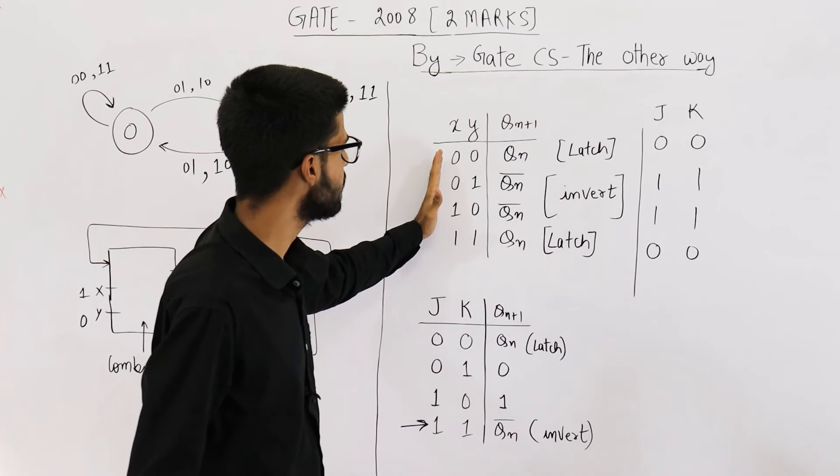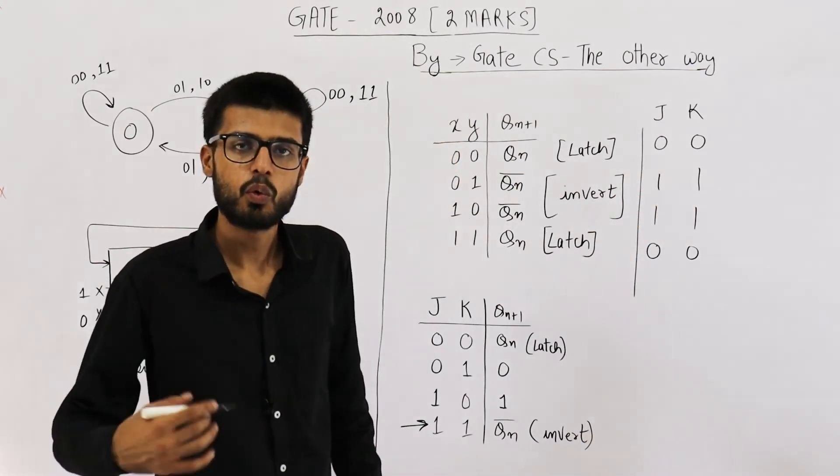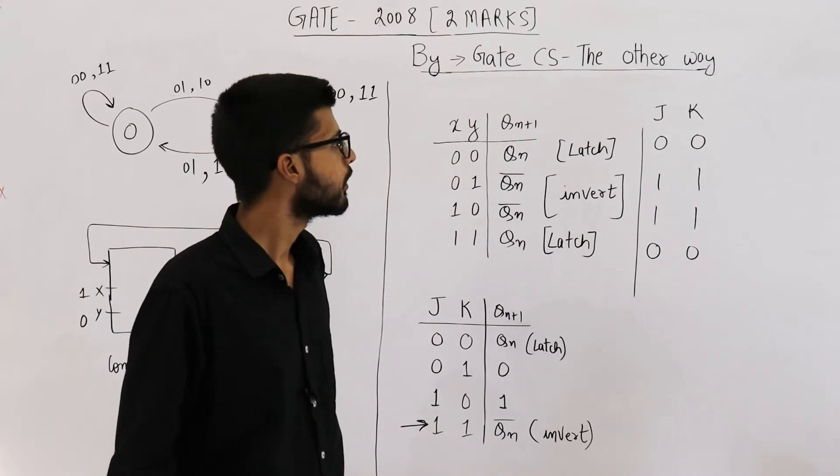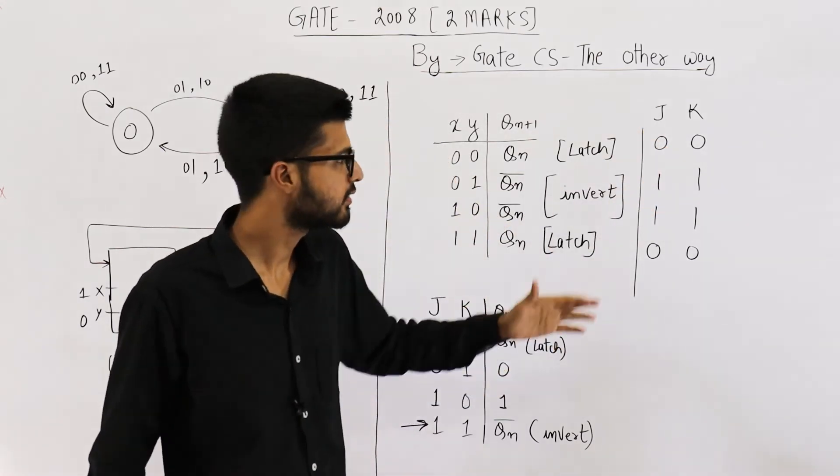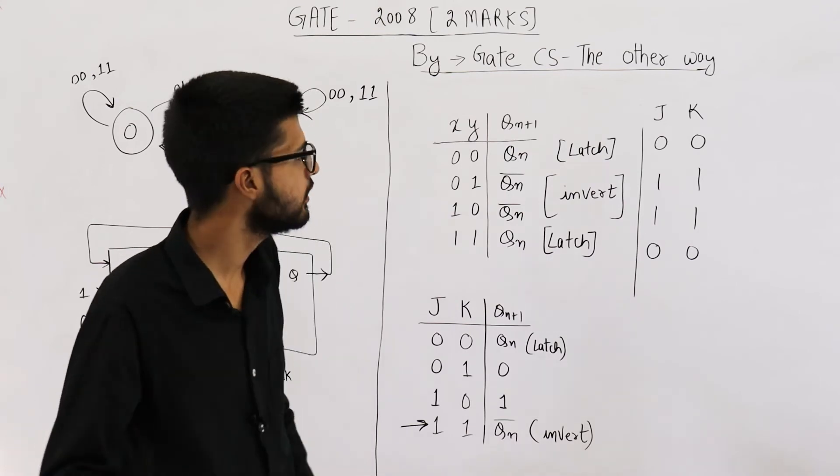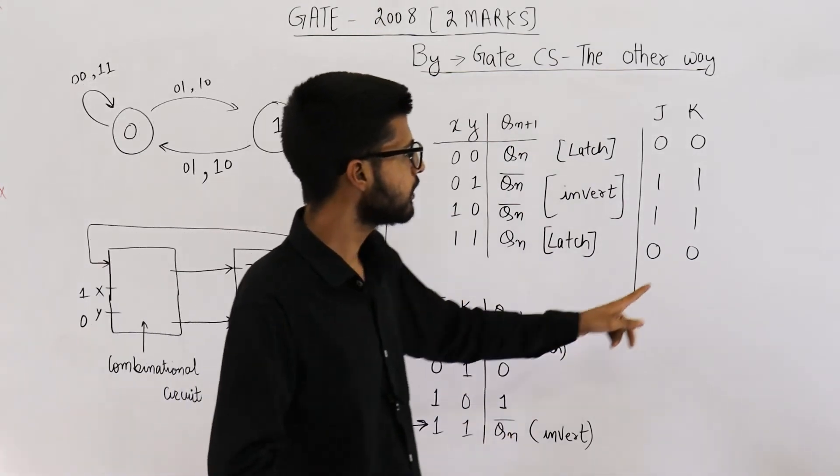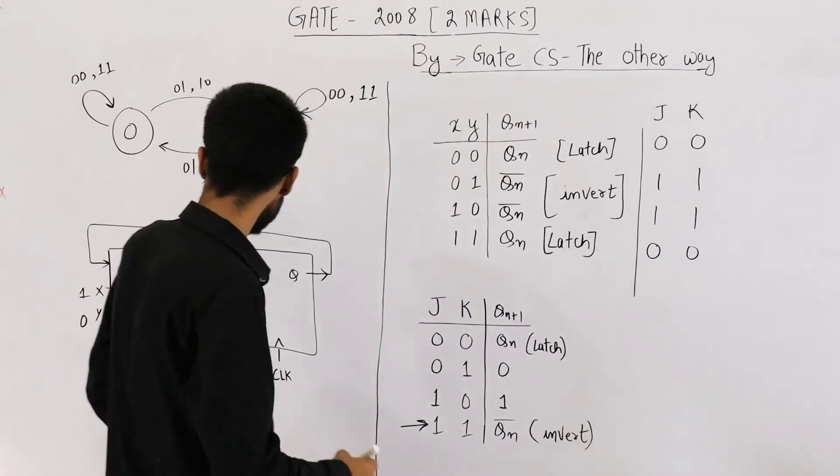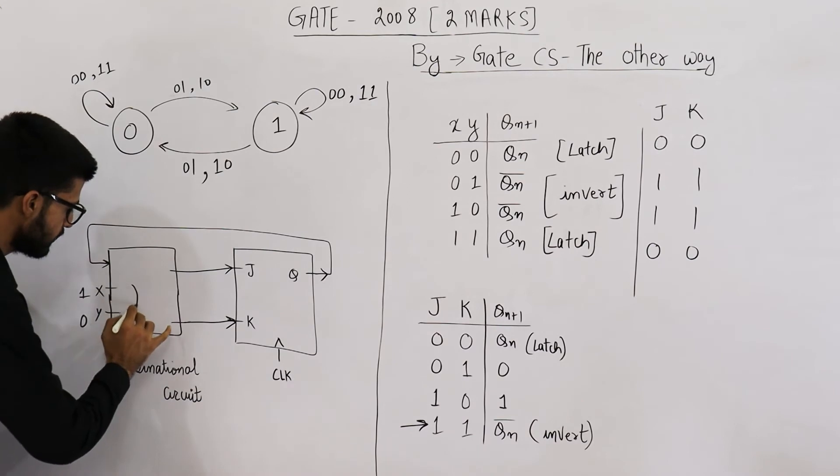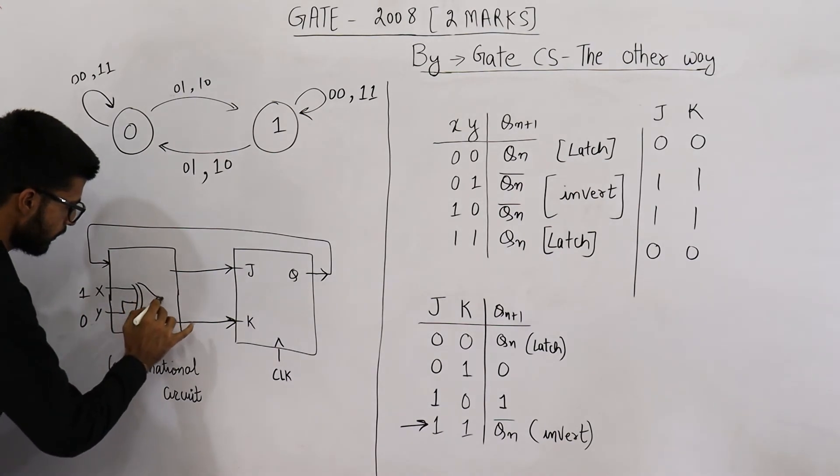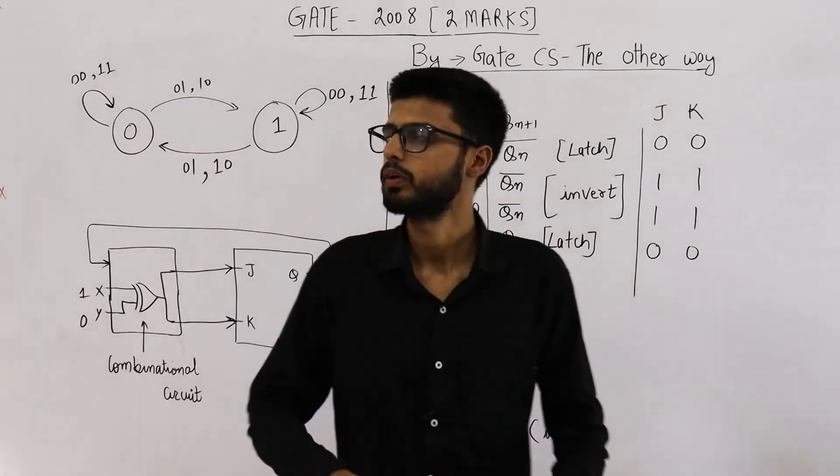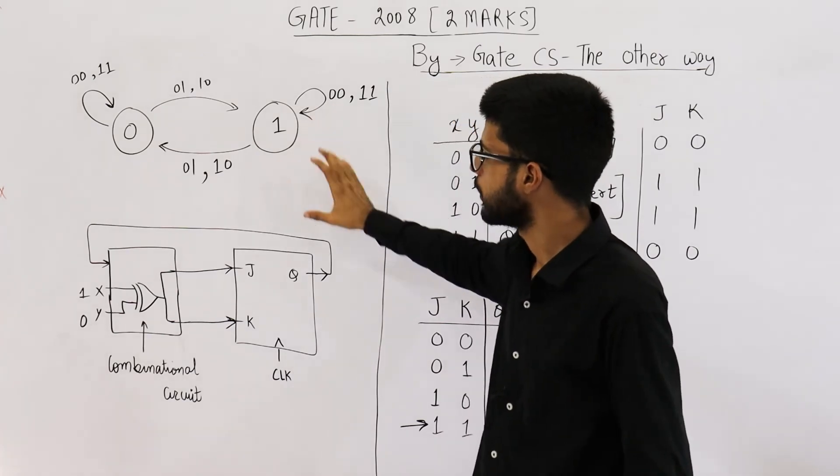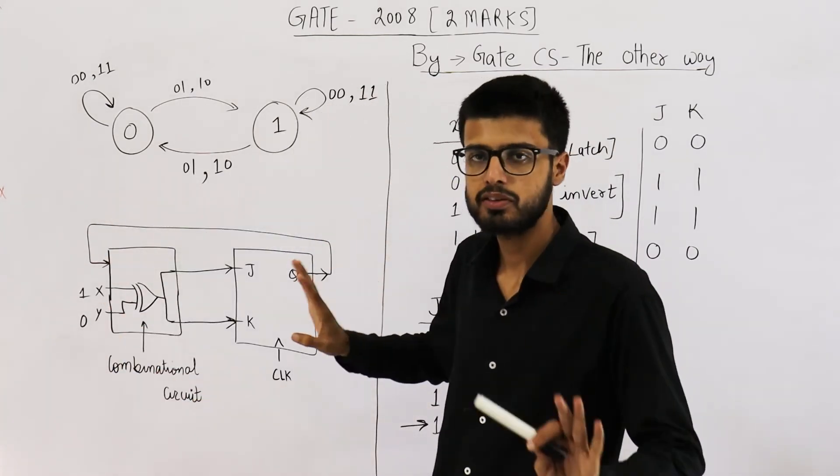Now, we want to convert these values of X and Y into these values of J and K. What will be the combinational circuit to do that? You can see this is XOR of X and Y. J is XOR of X and Y. It's clearly visible. We don't even need to draw any K-map. Similarly, K is also XOR of X and Y. That means if we just place an XOR gate here like this and its outputs are connected to J and K, we will get the desired flip-flop. So this flip-flop is implemented.